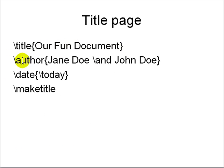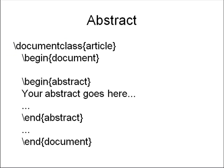The title page looks like this: some title, author, and date. The first thing you write in your report is an abstract — you say begin abstract, end abstract, put in some abstract text, and it's inside the document.